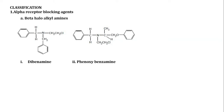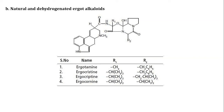The classification of alpha adrenergic blockers is as follows. First are beta-haloalkylamines; examples include dibenamine and phenoxybenzamine. Second are natural and dihydrogenated ergot alkaloids, which act as alpha-1 receptor blockers.